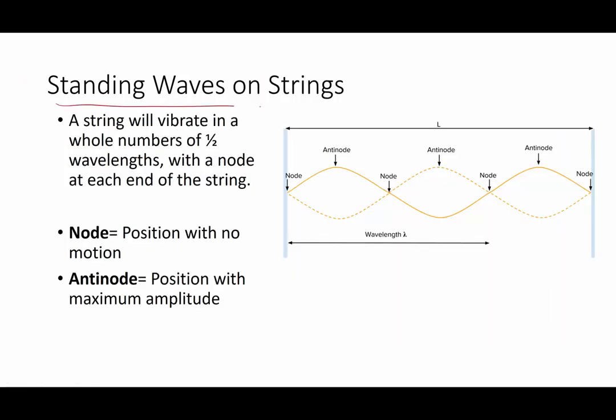If we have a standing wave on a string, when we're talking about strings we're talking about musical strings like string instruments, guitar, violin, piano, things like that. But we're also talking about linear structures, any sort of a linear structure like a bridge or a cable or an electrical power transmission line. All of those are linear structures. A string is going to vibrate in a whole number of one-half wavelengths with a node at each end of the string. Now that is very important. Put that down under standing waves of strings. Make sure you write that down.